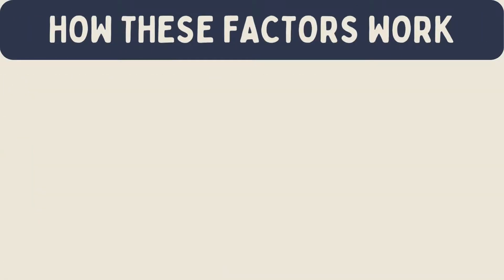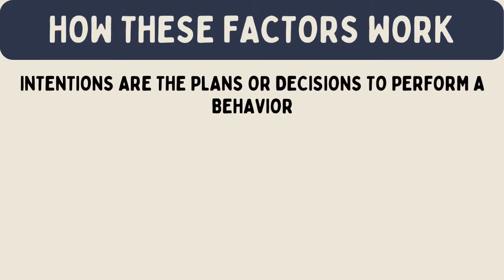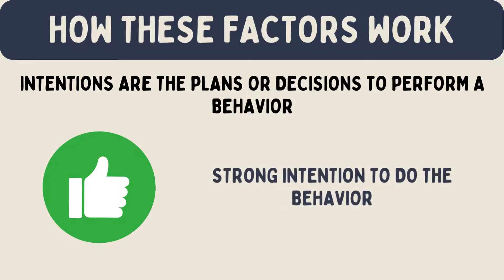These three factors work together to shape a person's intentions — the plans or decisions to perform a behavior. If a person has a positive attitude, feels social pressure, and believes they have control, they are likely to have a strong intention to do the behavior. Strong intentions usually lead to actual behavior.